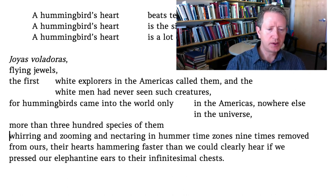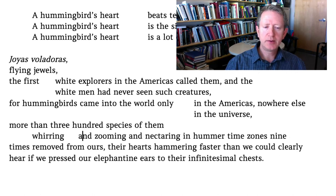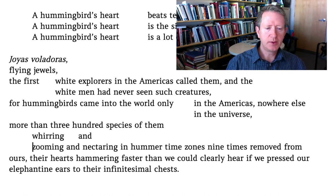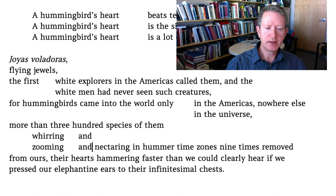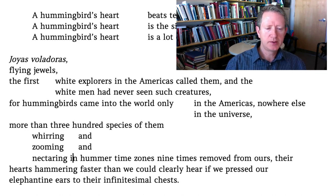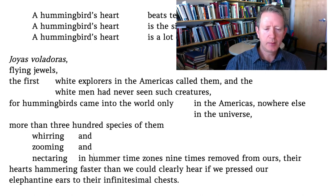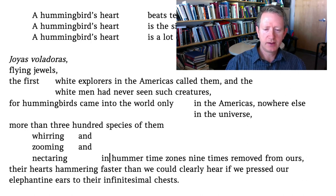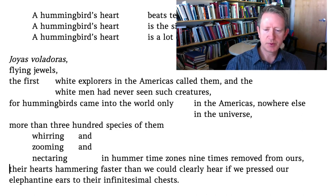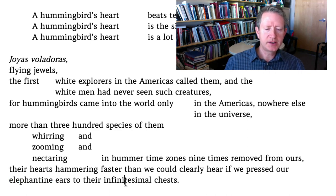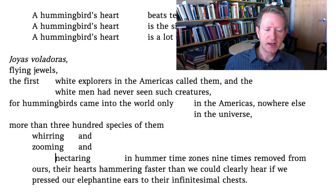Once I start seeing repetition, I put it on a new line and start lining it up. Generally when I find the word 'and,' I leave it hanging on the line before it so we can emphasize the more principal words aligned on the left. Then this other absolute phrase: 'their hearts hammering faster than we could clearly hear if we pressed our elephantine ears to their infinitesimal chests.' I notice 'elephantine' and 'infinitesimal' — these big polysyllabic words seem parallel to each other, both adjectives preceding single-syllable body parts.